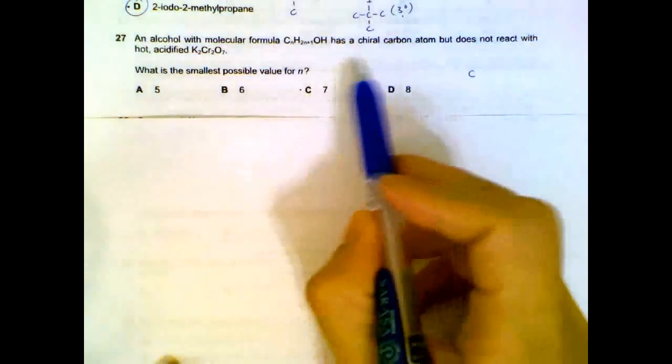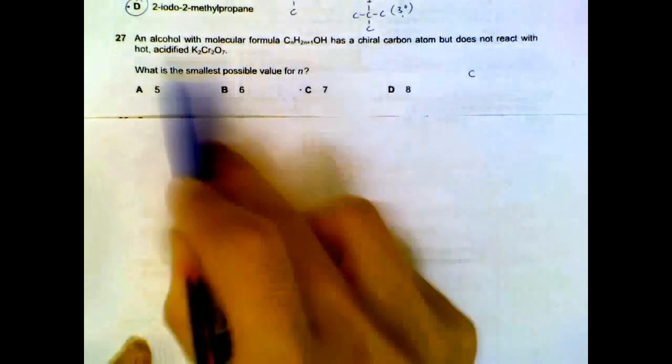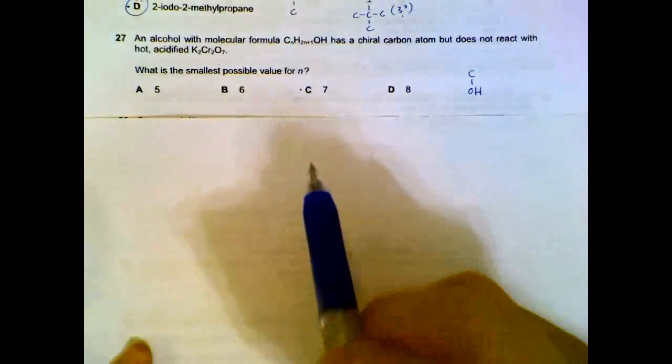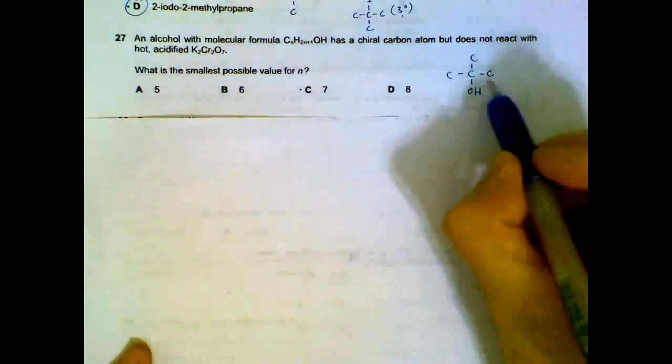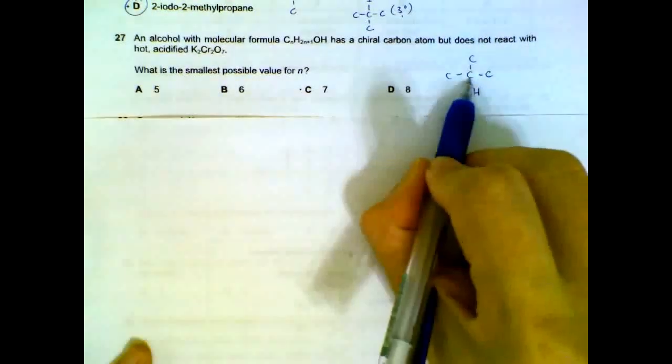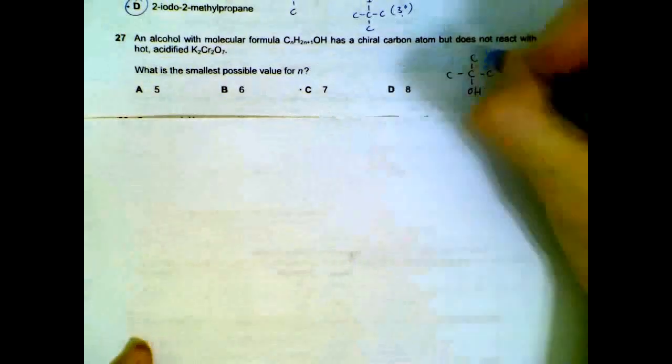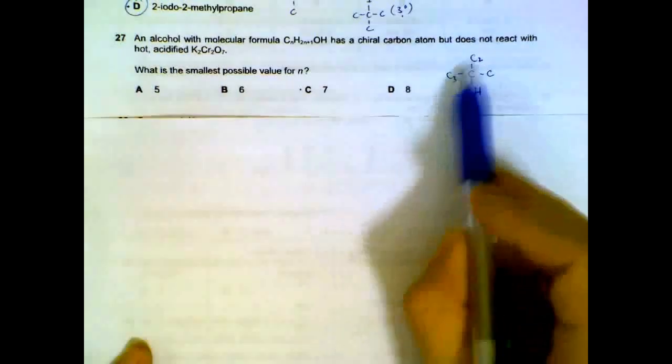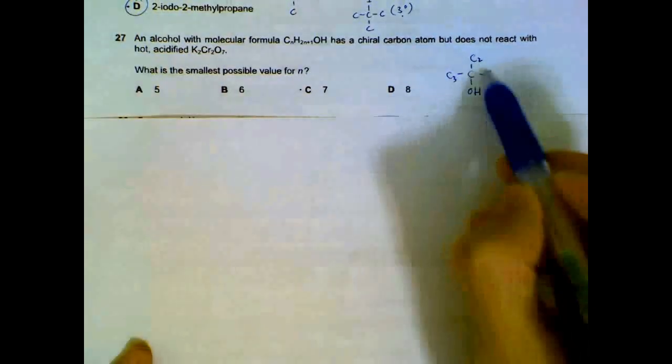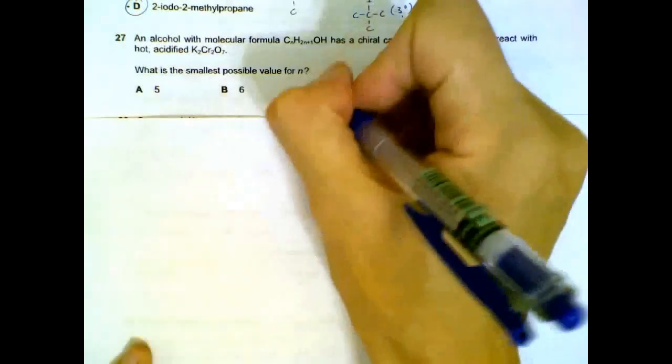Question 27. An alcohol has a chiral carbon and does not react with acidified dichromate, so it means that the alcohol is actually a tertiary alcohol. What's the smallest possible number of carbons it should have for it to be chiral and tertiary? So we make it tertiary first, and it must be chiral, so this carbon must be joined to 4 different groups. There's one carbon here, there must be at least 2 carbons here, and there must be at least 3 carbons here so that we have 4 different groups. So the total number of carbons will be 7 minimum.